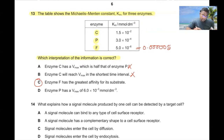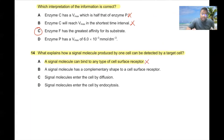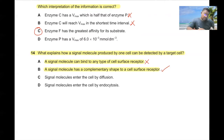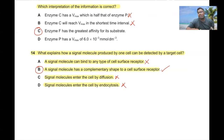Question number fourteen. What explains how a signal molecule produced by one cell can be detected by target cells? A signal molecule cannot bind to any type of cell surface receptor, as that would allow detection by any cell. Signal molecules do not generally enter the cell by diffusion or endocytosis. The correct answer is B: a signal molecule has a complementary shape to the cell surface receptor of the target cell.